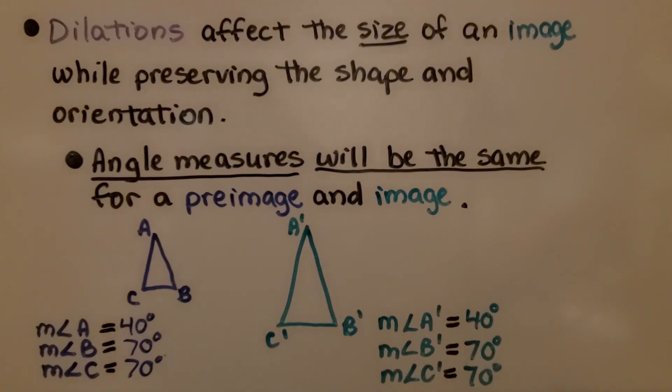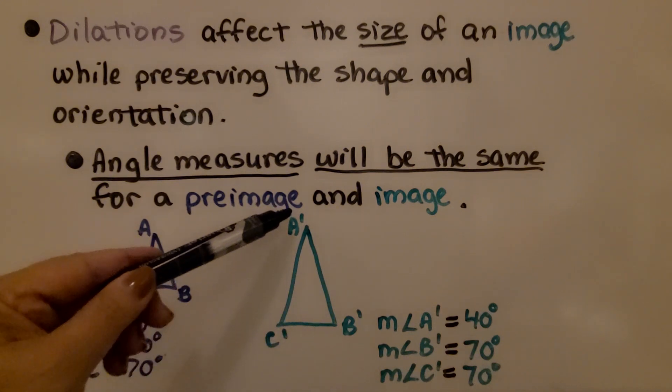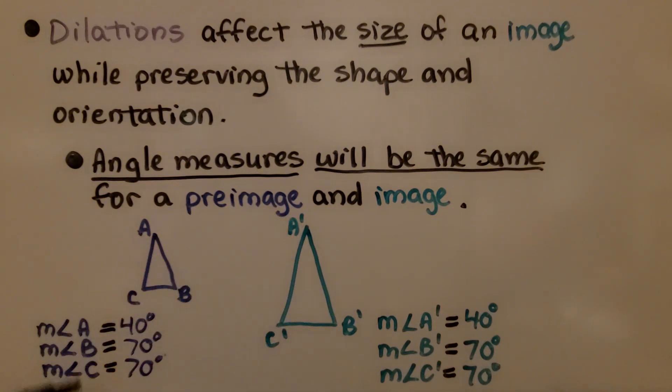Dilations affect the size of an image while preserving the shape and orientation. Angle measures will be the same for a preimage and an image. If we have triangle ABC and we dilate it and make it larger and have A prime, B prime, C prime, if we measure the angles of ABC, we'll get the same measures for the image A prime, B prime, C prime. The angle measures will be the same, but we know the side lengths got longer. It's the same shape and same orientation.